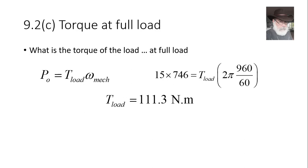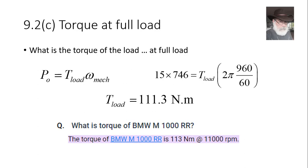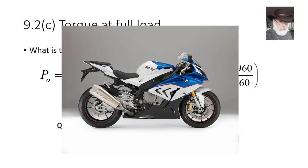To put 111 newton-meters in perspective, a BMW S1000 motorcycle gasoline engine produces 113 newton-meters of torque — nearly the same. However, that engine operates at 11,000 RPM, meaning its output power is much, much larger than our DC motor. The same torque at a much higher speed yields significantly greater power.